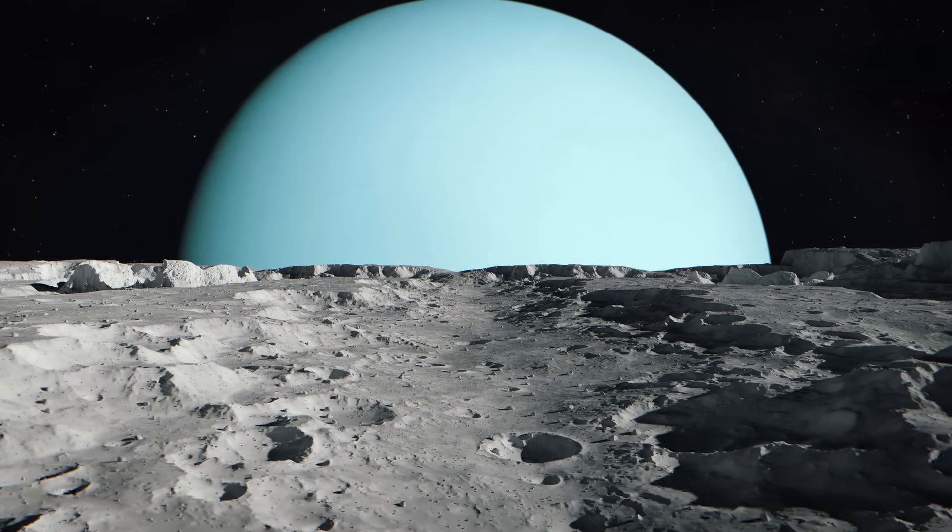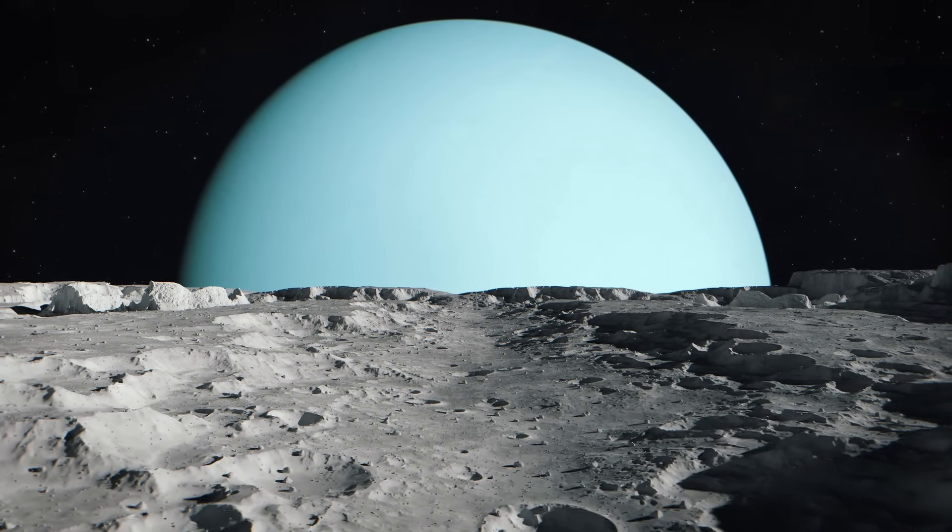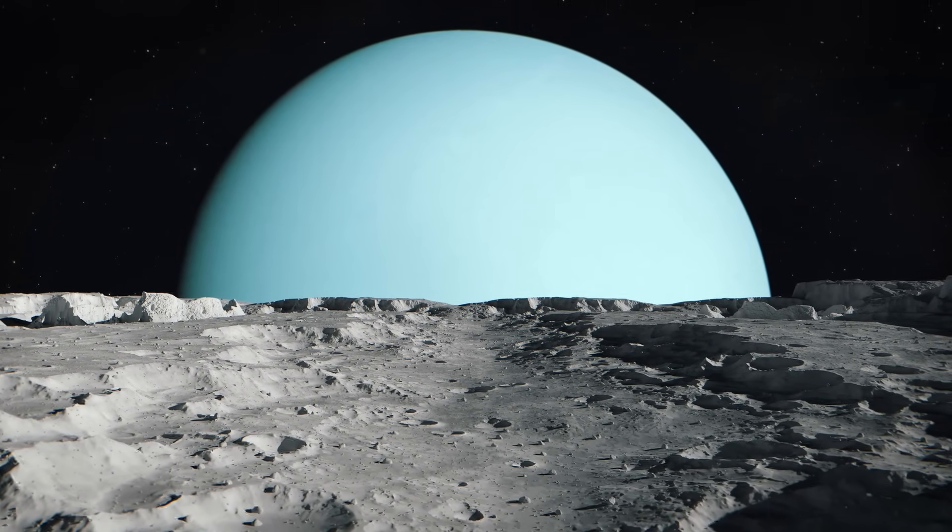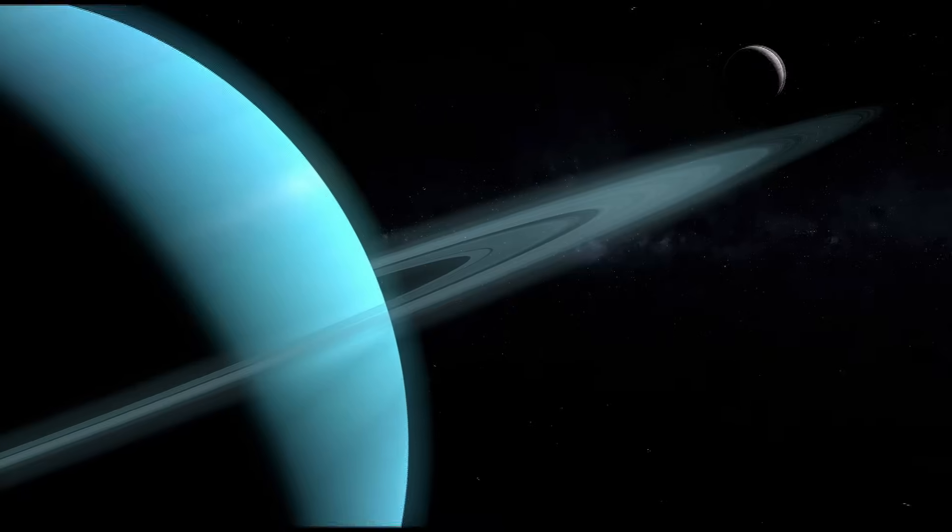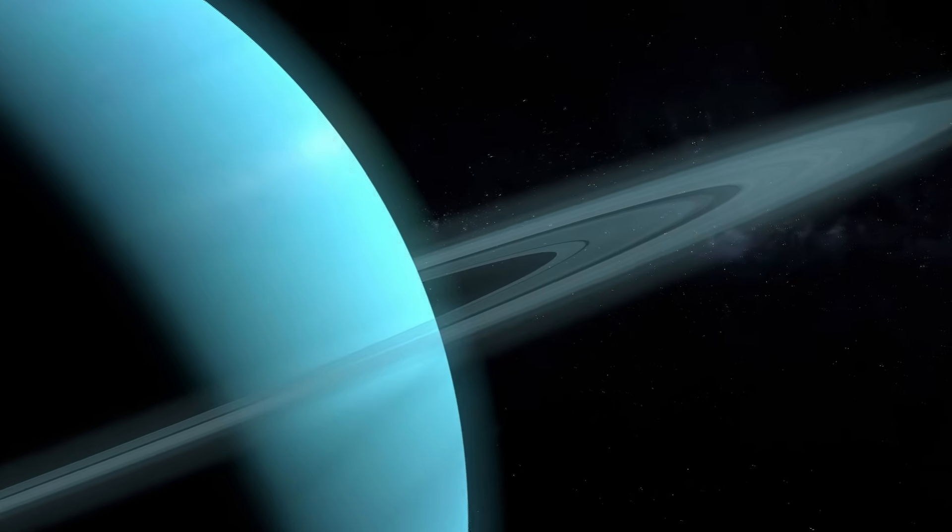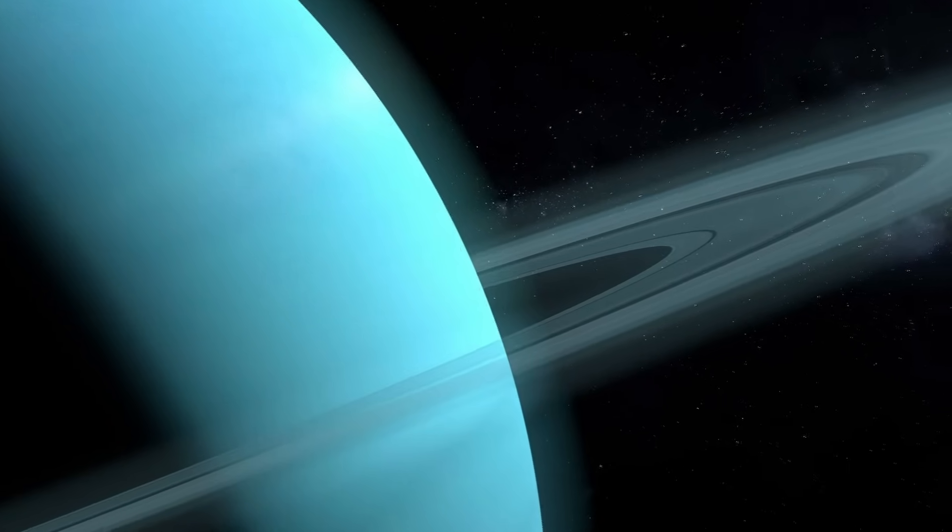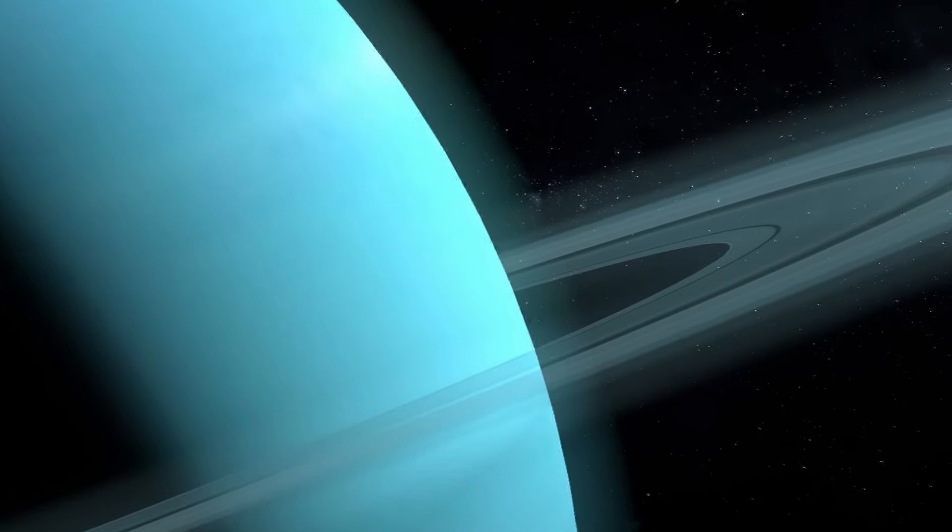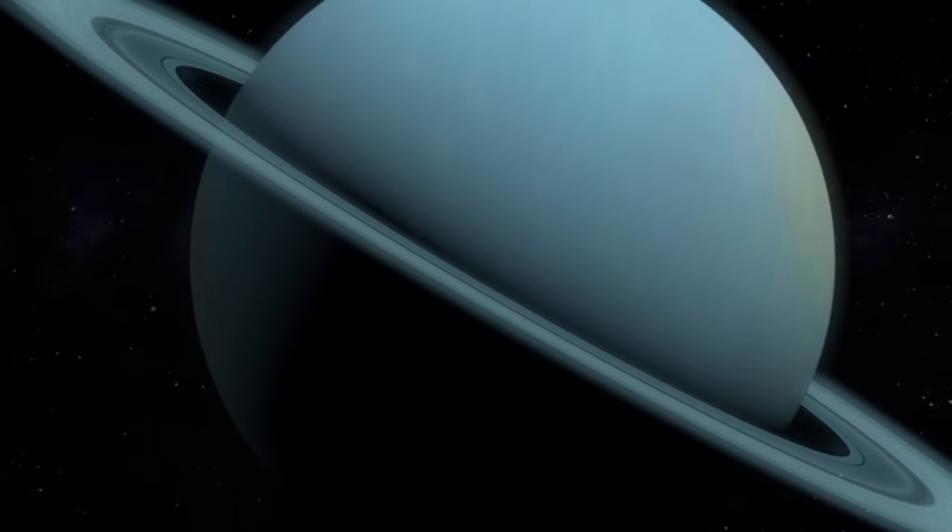Uranus, its neighbor, presents a different puzzle. It's a paler, more cyan-blue. This isn't because it has less methane. It actually has more. Instead, it seems Uranus has a more stagnant, sluggish atmosphere, allowing a thick layer of haze to build up and concentrate, giving it a whiter, more washed-out appearance compared to Neptune's deep azure.